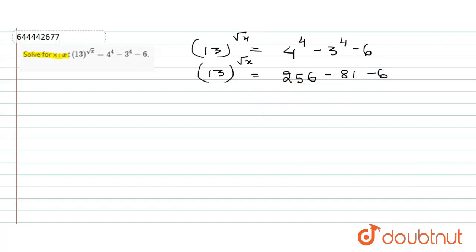256 minus 81 minus 6. So I can write it as 256 minus 87. So after subtracting 256 from 87, I will be getting 169.